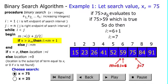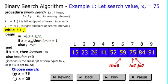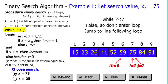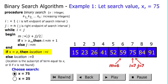Then, 75 is greater than 59, which is a sub 6. So, we move the i. Now, the while loop doesn't enter, because i is not less than j.